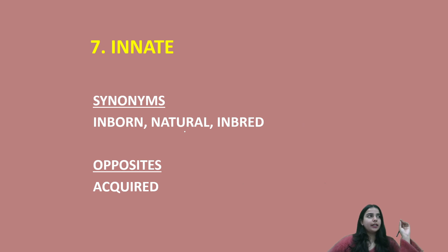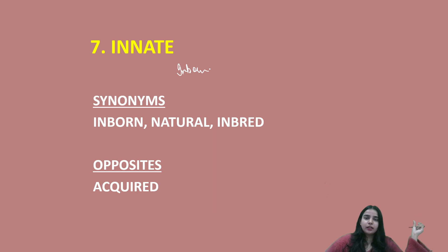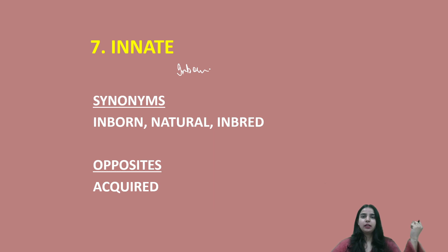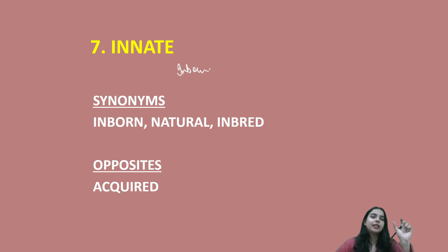Innate. If you've studied biology, innate ka matlab hota hai inborn — something which you are born with. Some talents are innate in people — they haven't learned them, it's inborn. So synonyms: inborn, natural, inbred — inbred comes from 'breed,' from breeding, meaning what is inside you naturally. The opposite is acquired — something that you have learned with time. For example, some people are very good at singing and dancing innately, but they learn to play guitar — that is an acquired talent. There is also a common slang: 'acquired taste' — do share its meaning in the comments.